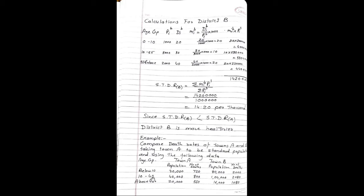For Town B, age group 10 to 40: population is 1,04,000 and total deaths are 2,080. For age group above 40 in Town B: population is 16,000 and total number of deaths are 1,080. We will now see the calculations. STDR for a population, the formula is summation MIA into PIS upon summation PIS.